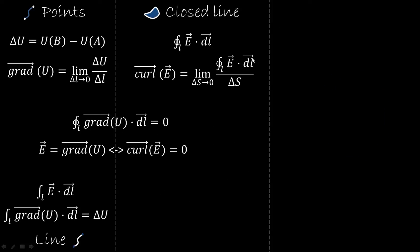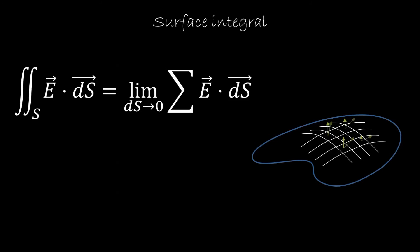To sum up: we worked with closed lines, defined the closed line integral, and saw the curl as the limit of the closed line integral. We saw that the closed line integral of a gradient is always zero, so if a vector field is a gradient of a scalar field, its curl is zero. Conversely, if the curl of a vector field is zero, then the vector field is the gradient of some potential. Now we step up to surfaces.